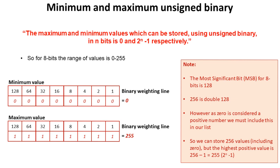If we take a look at this, the most significant bit, that's the one on the far left here for an 8-bit unsigned binary number, is 128. 256 is double 128, and indeed if we had one extra column over here it would have a weighting of 256.